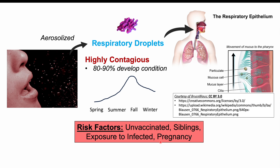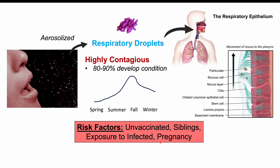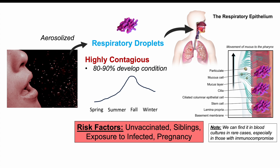When aerosolized droplets are in the environment and a patient is exposed, the bacteria adhere to respiratory epithelium — the cells lining the respiratory tract. The bacteria multiply throughout the respiratory epithelial tract and can spread all the way down into the bronchi and bronchioles. Importantly, they don't cross the respiratory epithelium to enter the bloodstream; they stay within the respiratory epithelium. So we won't find this bacteria in the blood or in blood cultures.